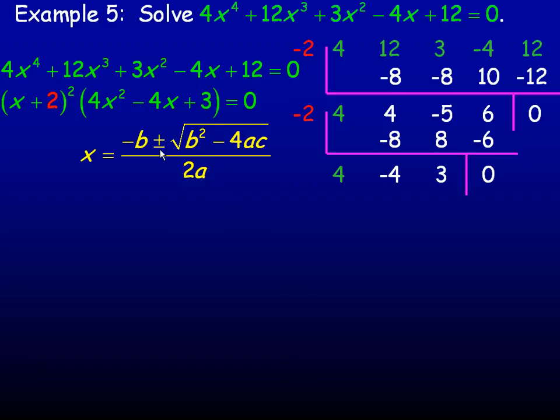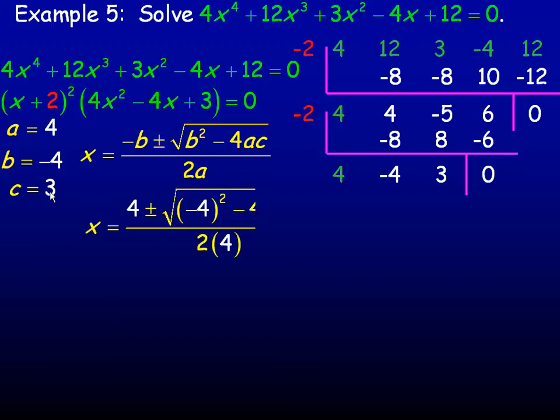And so we could try to use the quadratic equation to solve this. So there's the quadratic equation. Of course, a is 4, b is negative 4, and c is 3. And so we plug in the 4, negative 4, and 3 in place of a, b, and c. And it looks like this.